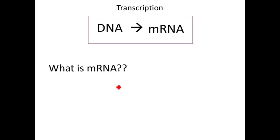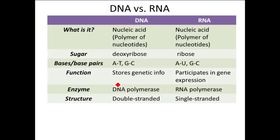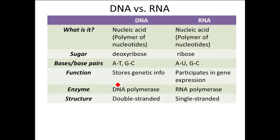mRNA is just a type of RNA. M stands for messenger RNA, and its particular job is to carry the genetic message from the DNA to the ribosome — so it's an intermediary and a copy of the genetic information. RNA is a nucleic acid, very similar to DNA. Both DNA and RNA are nucleic acids — polymers of nucleotides. They both have a phosphate group and a five-carbon sugar, but the sugar is slightly different: for DNA it's deoxyribose, and for RNA it's ribose.